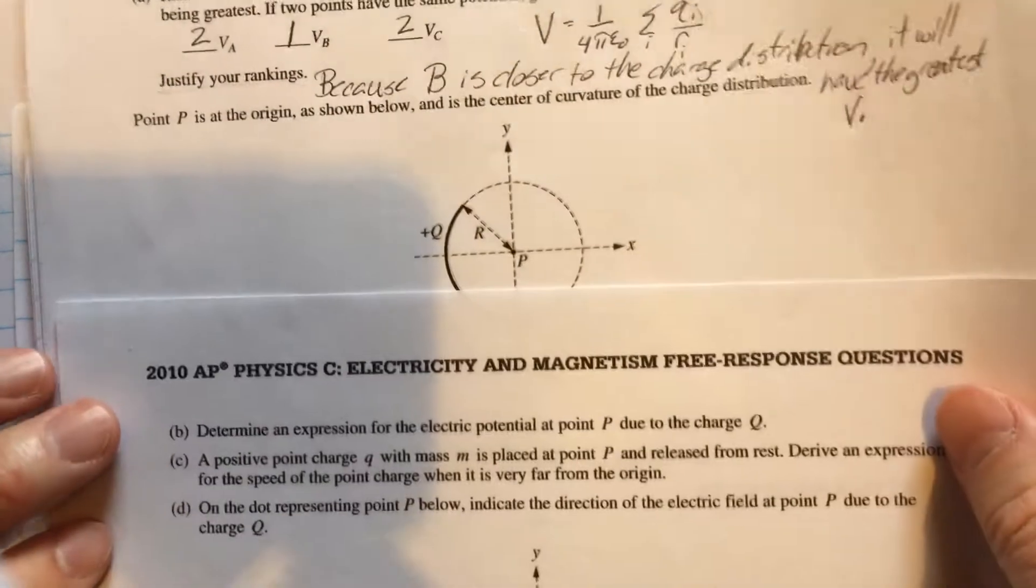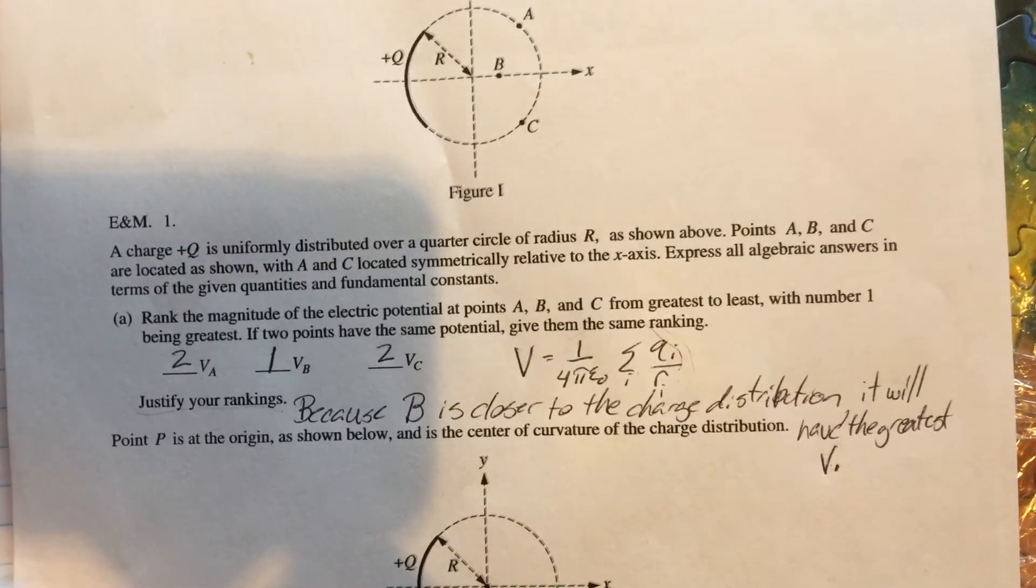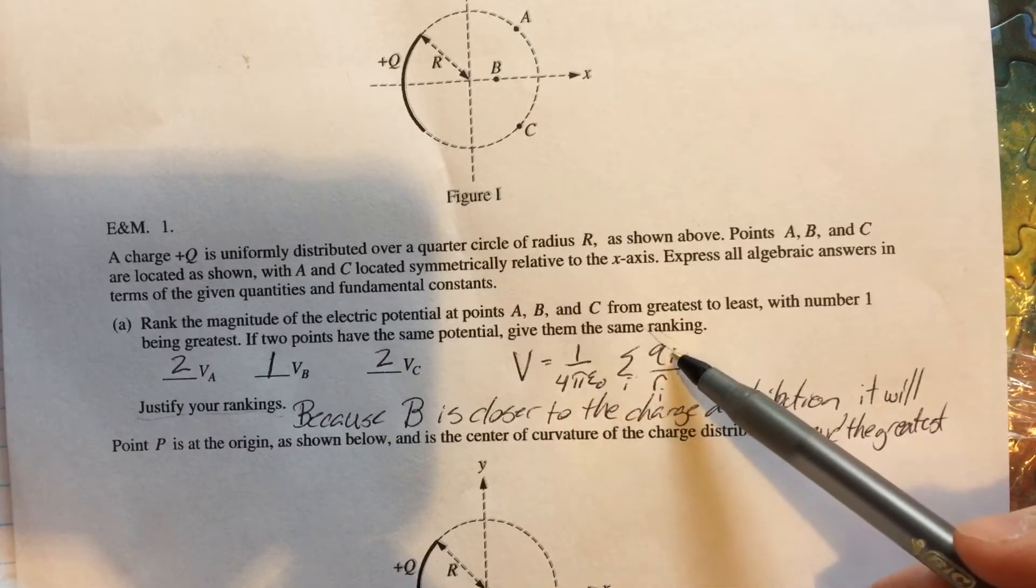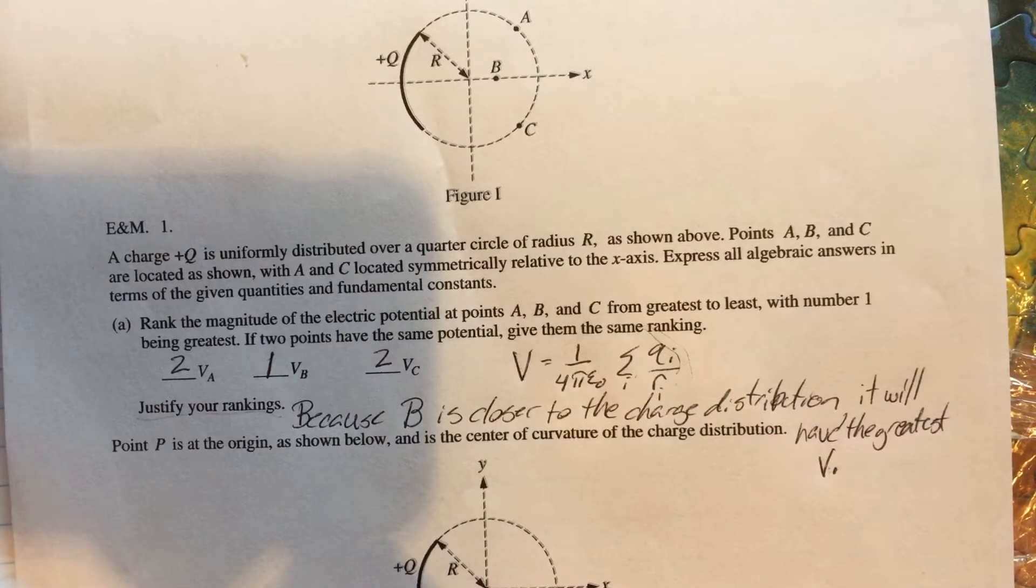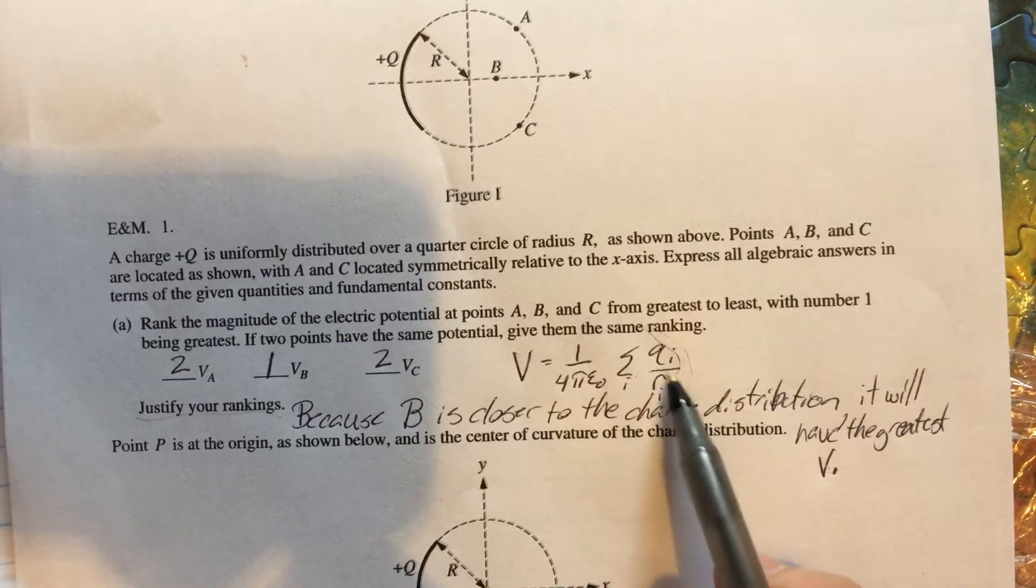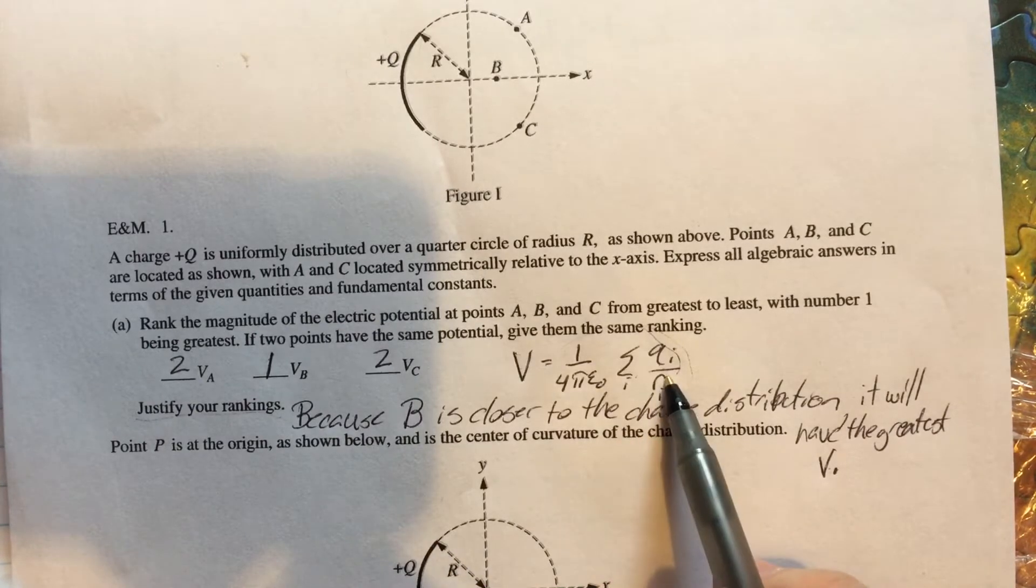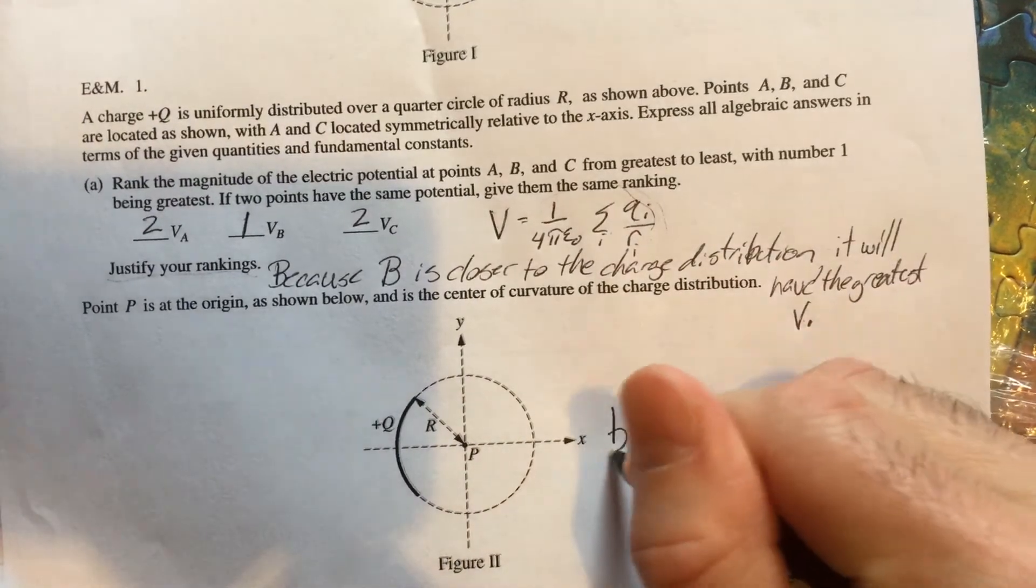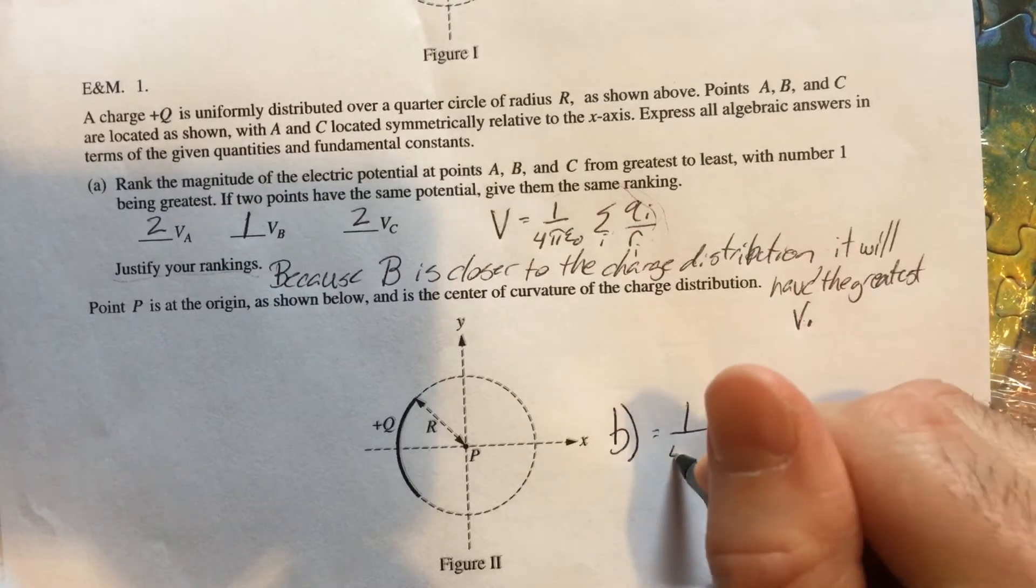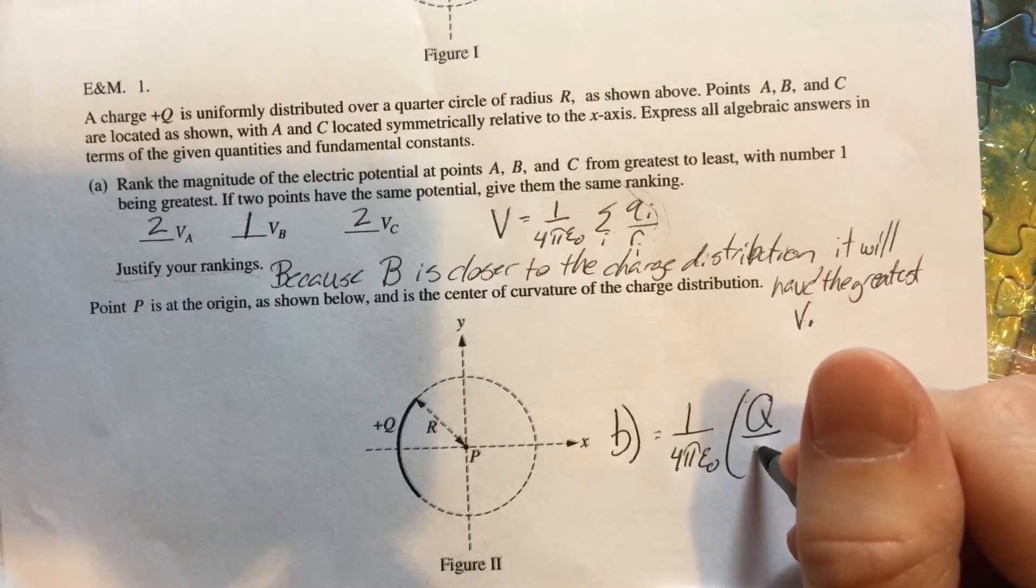So we're supposed to determine an expression for the electric potential at point P due to charge Q. We've already talked about the fact that the potential is due to the sum of all those individual charges divided by how far they are away from that point. Notice every single little point along this quarter circle is the same distance from point P. And so when I do sum up those individual little dQs, those little pieces of charge, they'll actually end up all being the same distance away, and the total amount of charge will be Q. So for part B, I'm just going to end up with 1 over 4 pi epsilon naught times big Q over big R.